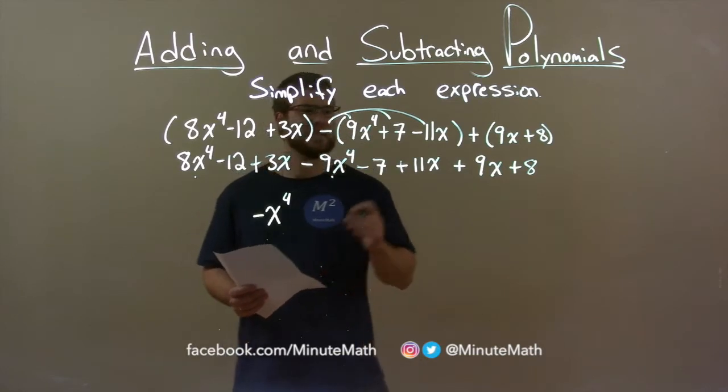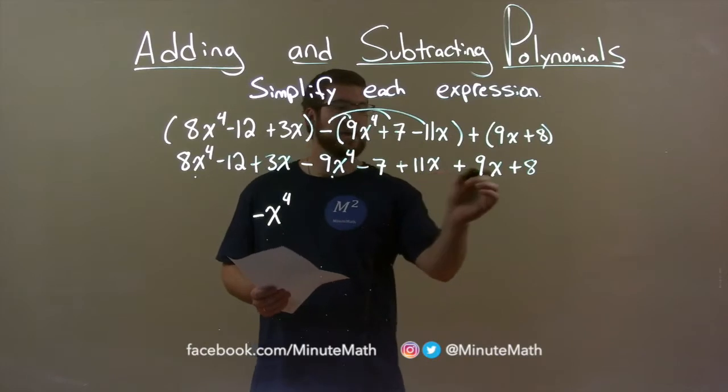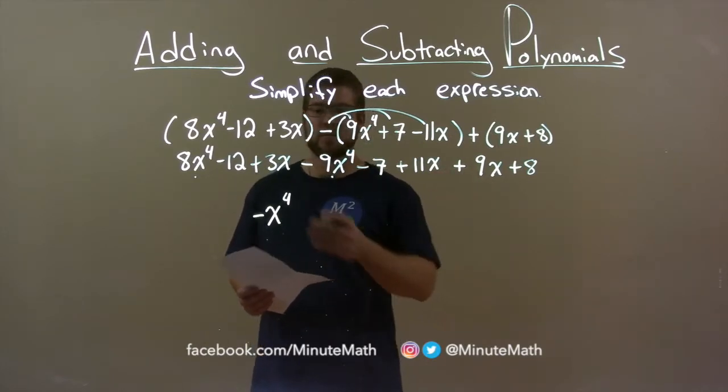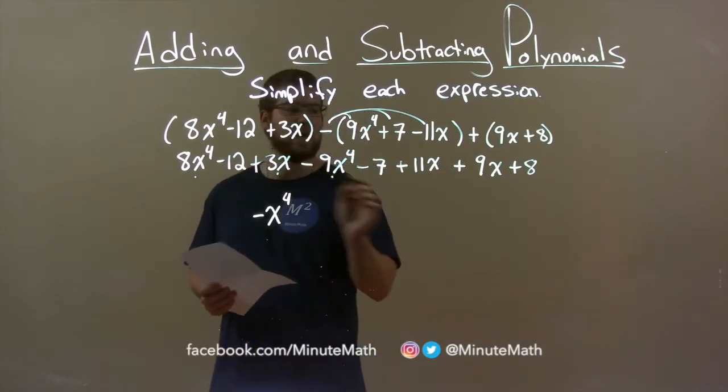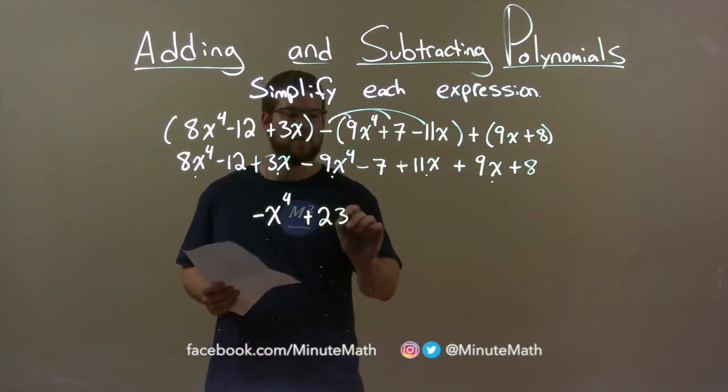Next highest degree I see is just an x. We got a 3x, 11x, and a 9x. 11x plus 9x is 20x, plus 3 is 23x. So, dots again, we have plus 23x.